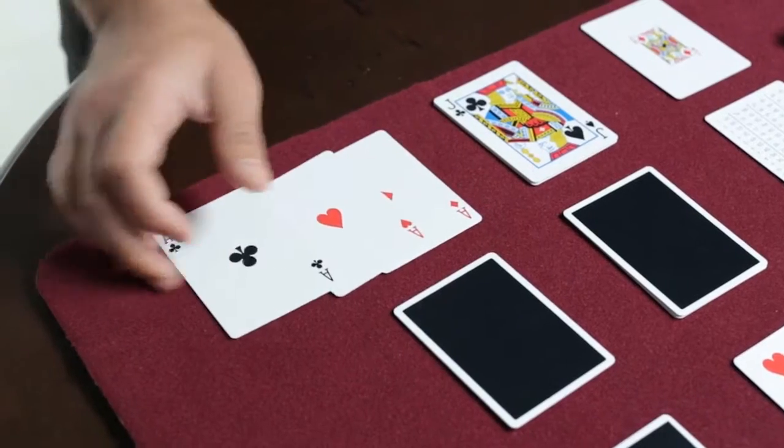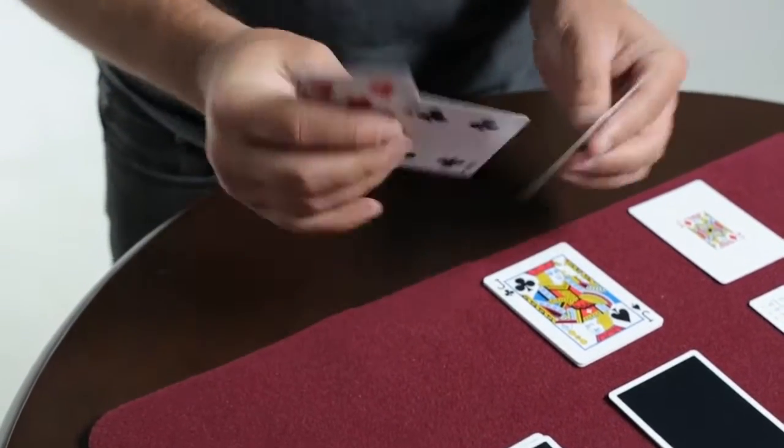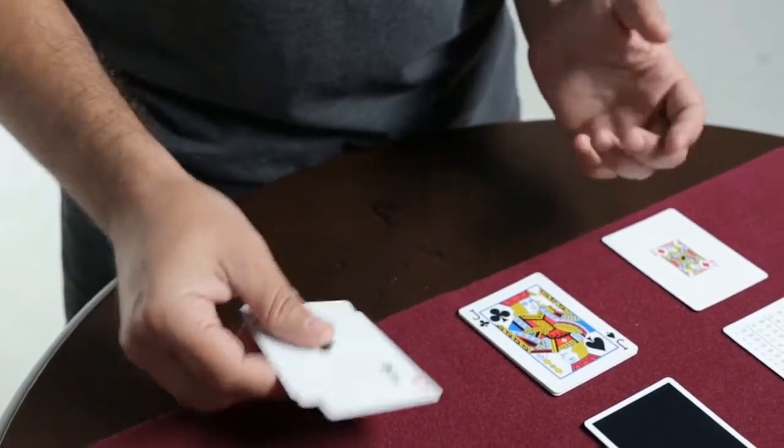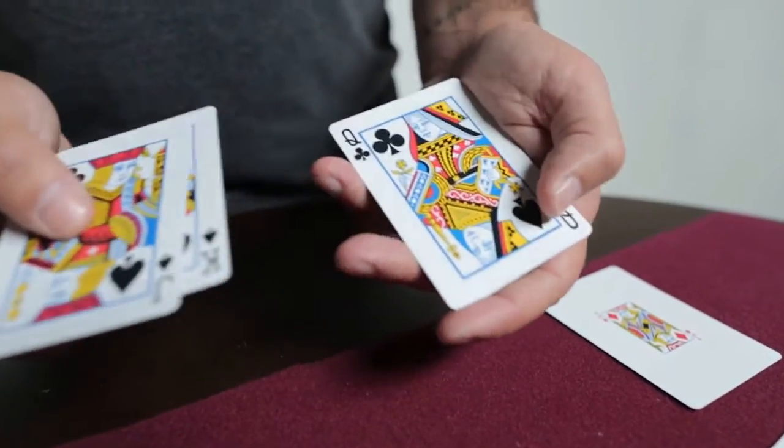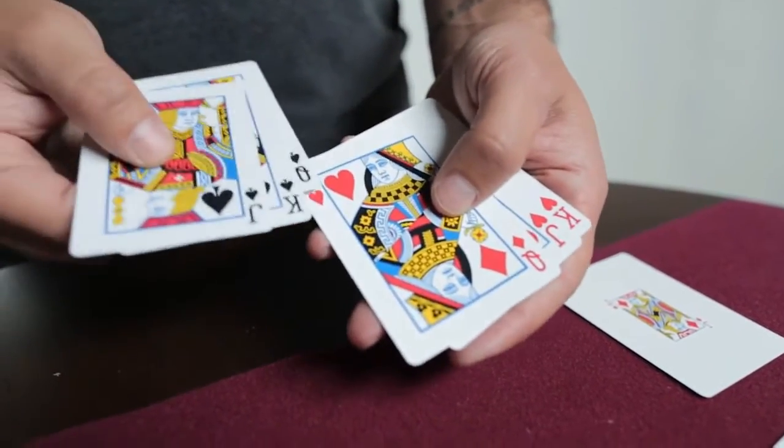We have cards in here that are double backed and this can do the McDonald's Aces. There's also cards that are mist pipped, and this can help you achieve something like the princess card trick.